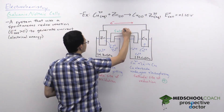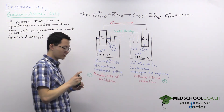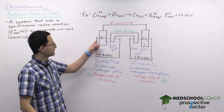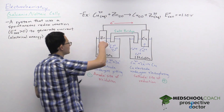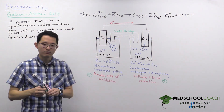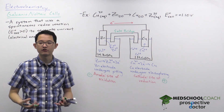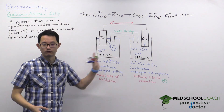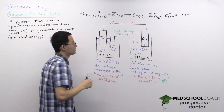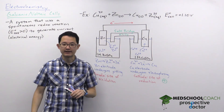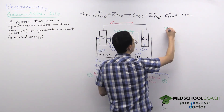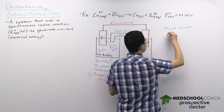That's why we also have a salt bridge — the component in the middle connecting the two half-cells. Recall from physics that current requires a closed loop for electrons to flow through; without the salt bridge, everything is unidirectional with no loop. The salt bridge completes the circuit and allows electrons to continually circulate. It is made of an inert salt — one that won't disrupt the redox reaction — such as potassium nitrate (KNO₃), which contains K⁺ cations and NO₃⁻ anions. The salt bridge prevents charge buildup.